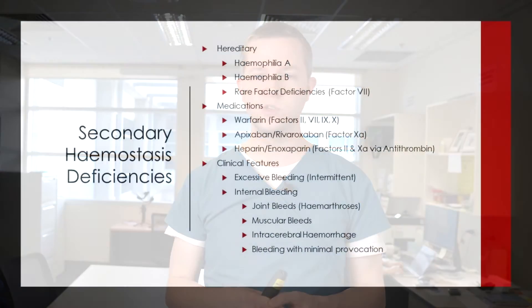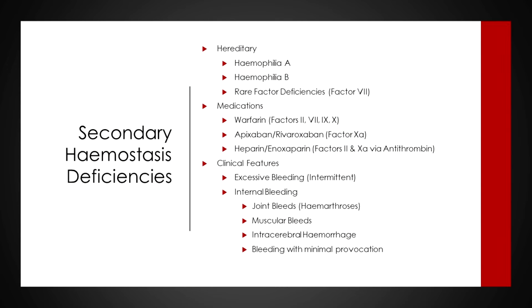Contrasting with secondary hemostasis disorders — this is a different pattern of bleeding and a different group of disorders. Just as von Willebrand's disease is an inherited primary disorder, there are well-known inherited disorders of secondary hemostasis: hemophilia A, which is a deficiency in factor 8; hemophilia B, which is a deficiency in factor 9; and rarer factor deficiencies including factor 12, factor 10, factor 11, factor 7, and rarely factor 5, as well as others.